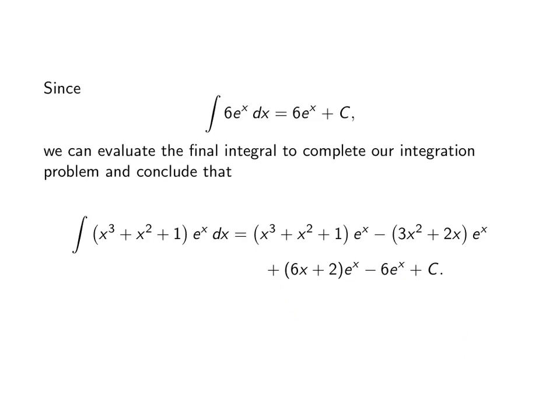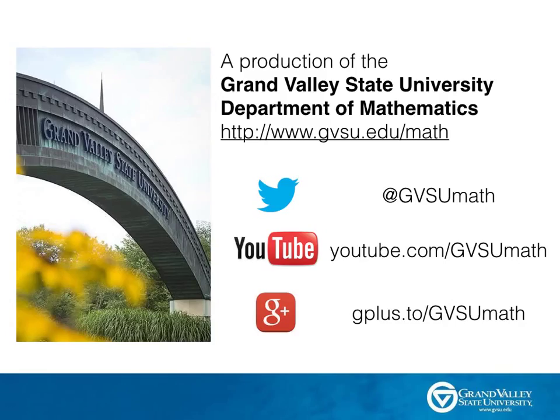To complete the integration we just need to integrate 6eˣ dx, which we can do directly — factor out the 6 and the integral of eˣ is just eˣ. So we conclude that the integral of (x³ + x² + 1)eˣ dx equals (x³ + x² + 1)eˣ minus (3x² + 2x)eˣ plus (6x + 2)eˣ minus 6eˣ plus C. That concludes this example of integration by parts. We hope to see you again soon.